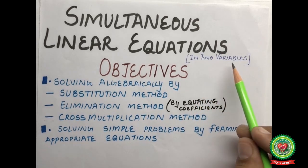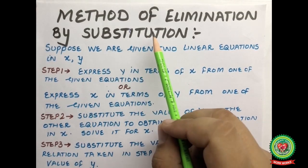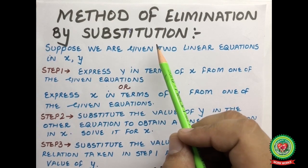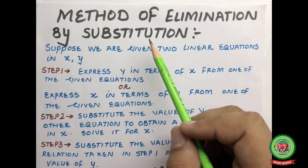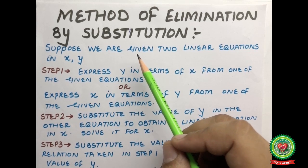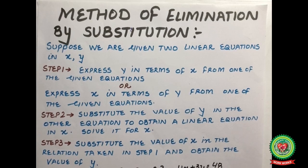Today we are going to solve simultaneous linear equations in two variables by substitution method. As the name suggests, substitution means to substitute. In this method, we are given two linear equations in two variables. From these two equations, we find the value of one variable in terms of the other, and substitute that value into the second equation, which then becomes a linear equation in one variable.